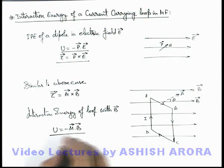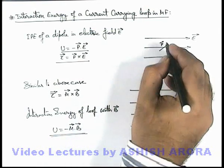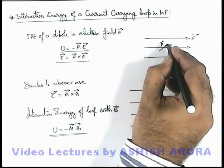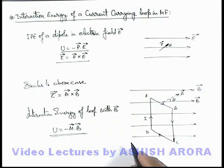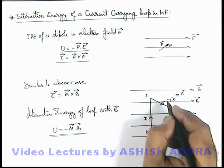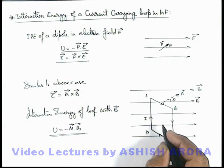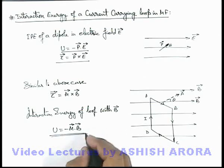But this relation is valid only if the coil will exactly behave in the manner in which an electric dipole behaves in electric field. In later part of coming topic we are going to discuss that a small current carrying coil exactly behaves like a magnetic dipole of which the behavior is similar to an electric dipole in electric field.